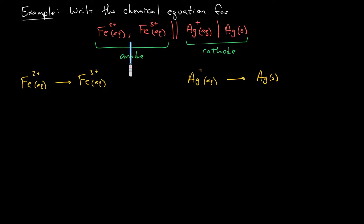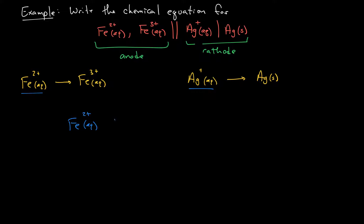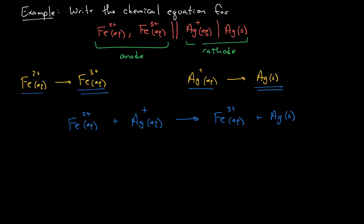Notice that at the anode we have a comma instead of a single line, because both species are aqueous — there's no phase boundary. A comma is used when there's no phase change. Now we combine the two half-reactions: everything on the left side of the arrows goes together — iron two-plus aqueous plus silver-plus aqueous — and everything on the right side goes together — iron three-plus and silver solid. That gives us the complete chemical equation.